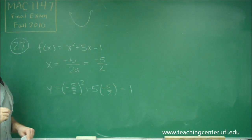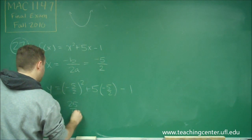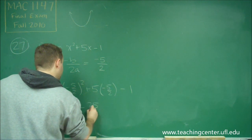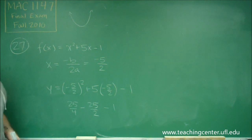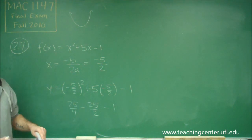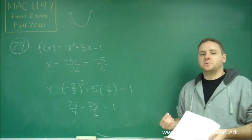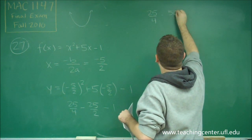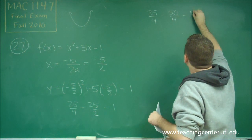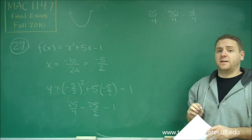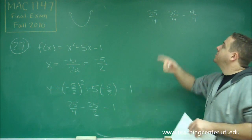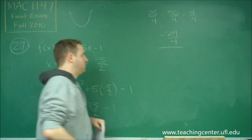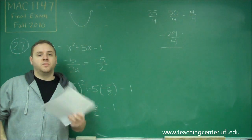Squaring makes it positive, so here we get 25 over 4, minus 25 over 2, minus 1. Now it's just a matter of getting our common denominator, which is 4. So we have 25 over 4, minus 50 over 4, minus 4 over 4. Combining everything: 25 minus 50 is negative 25, and negative 25 minus 4 is negative 29 over 4. So that must be the y value of our vertex.